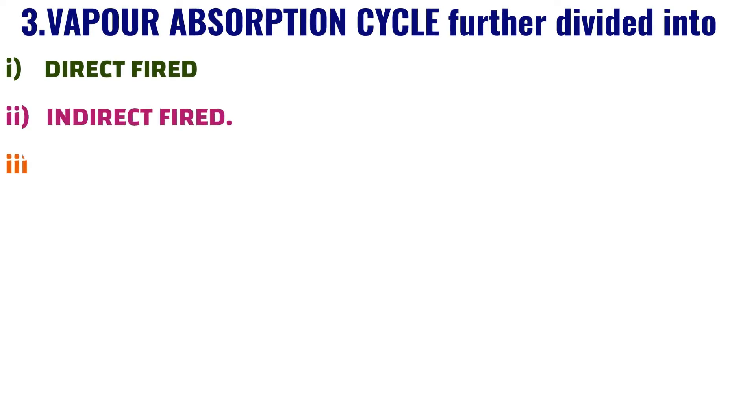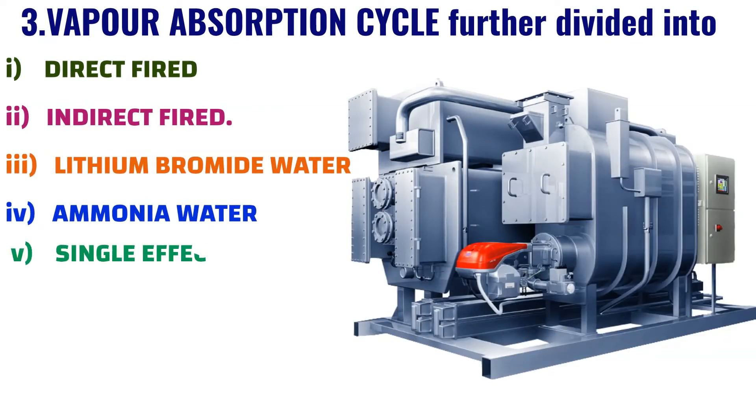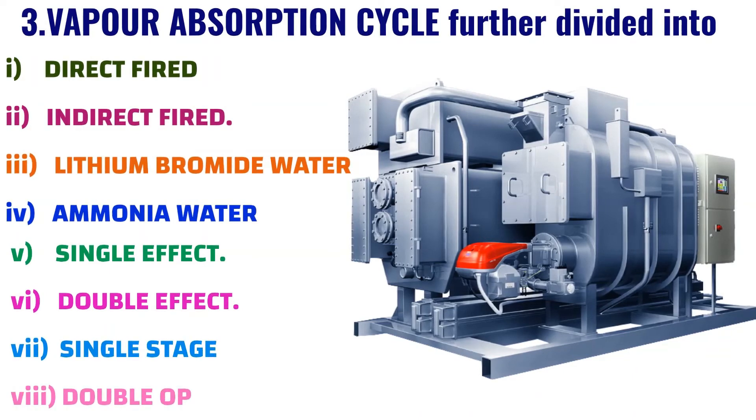Third, vapor absorption chillers are further divided into: one, direct fire; two, indirect fired; three, lithium bromide-water; four, ammonia-water; five, single effect; six, double effect; seven, single stage; eight, double or multi-stage.